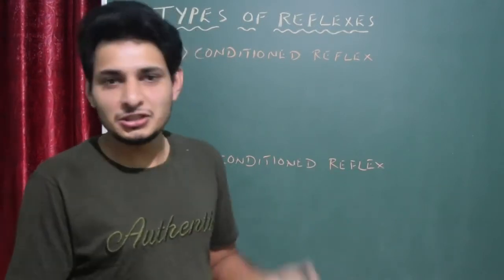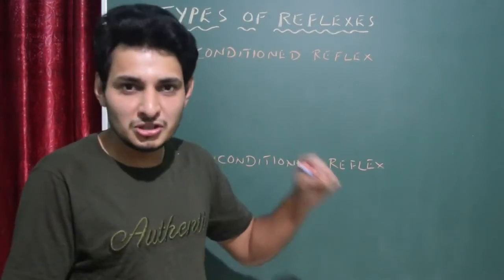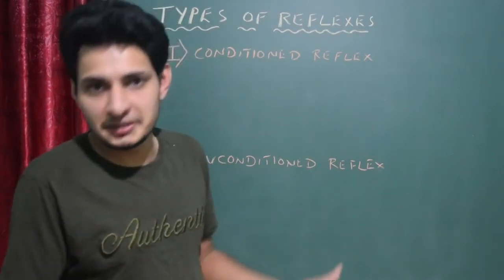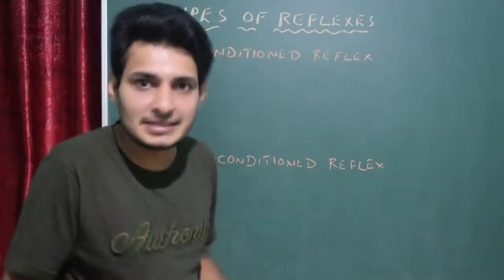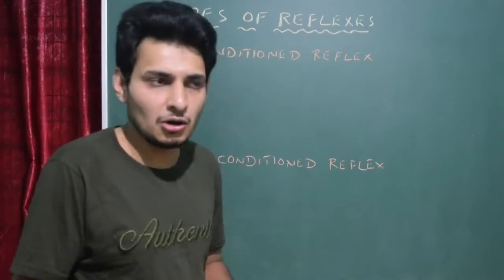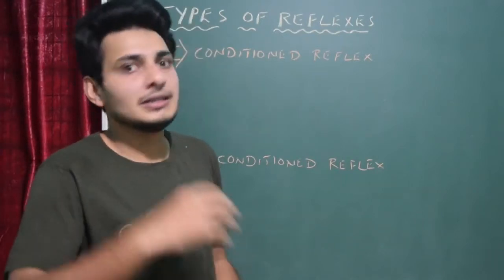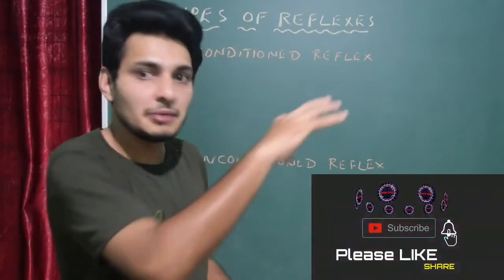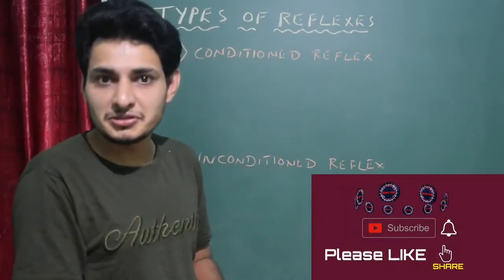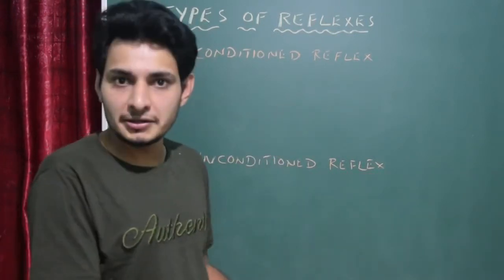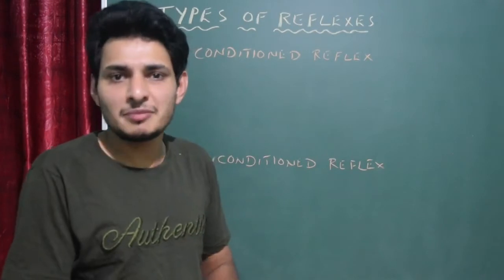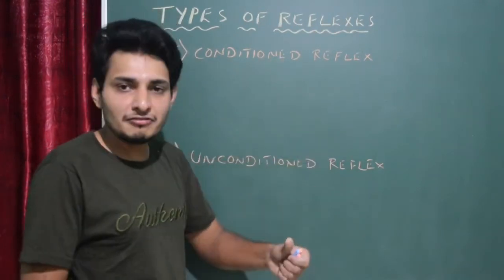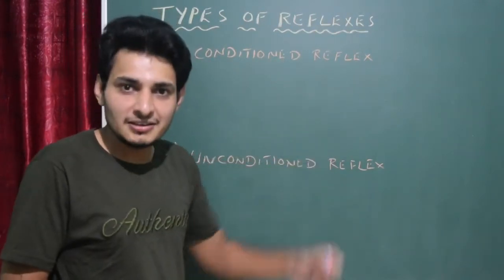Unconditioned reflex is one where nobody teaches you how to perform that particular activity — everything is involuntary and automatic. For example, sneezing, coughing, yawning, sexual behavior toward the opposite partner, or even migration in birds.